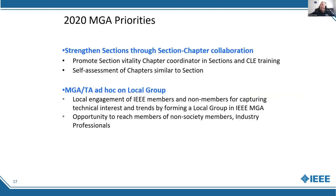Some of the main priorities from MGA are to strengthen sections through cross-chapter collaboration to promote section vitality, and to have a chapter coordinator position for sections in the CLE for training and onboarding. We're also conducting self-assessments of our chapters annually, similar to how we do this for our sections. We have an MGA and technical activities ad hoc group on local groups focused on local engagement of IEEE members and non-members for capturing technical interest and trends.